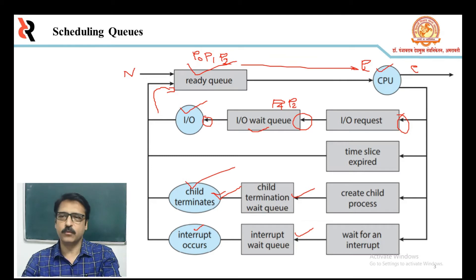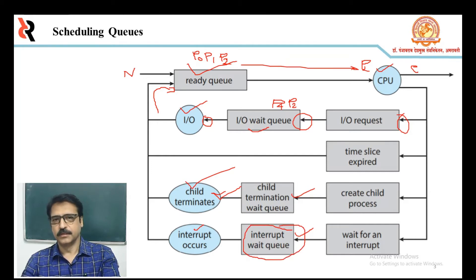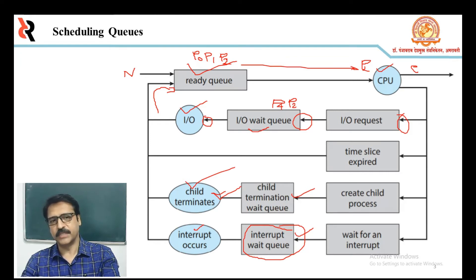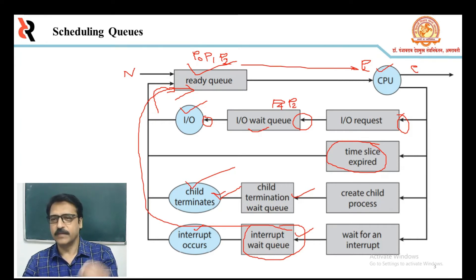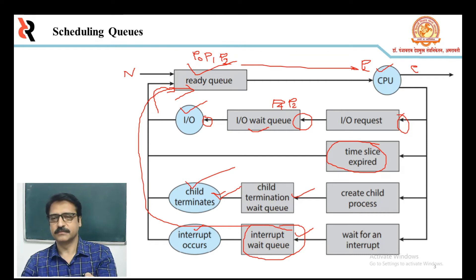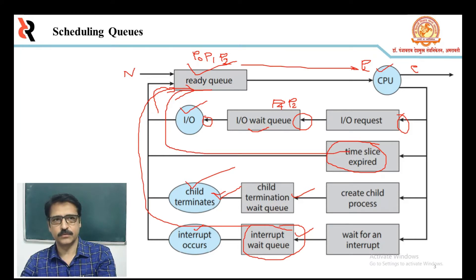Another event is that the process could be removed forcibly if an interrupt occurs; it is then put into the ready queue and must wait its turn again. Or the process may have its time slice expire — for example, if the time slice is 5 milliseconds, after 5 milliseconds the process's time limit expires and it is put into the wait queue, then placed back into the ready queue.